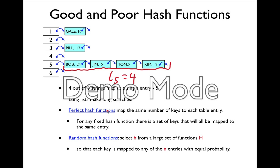What we want is a hash function that creates lists that are as short as possible, meaning that they're all of more or less equal length. If we use a perfect hash function that maps the same number of keys to each table entry, that would be very nice to have. However, that is possible only if you know the keys before you generate the hash function, because for any fixed hash function there is a set of keys that will all be mapped into the same entry and create a bad situation like this.